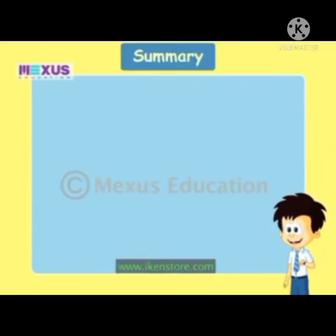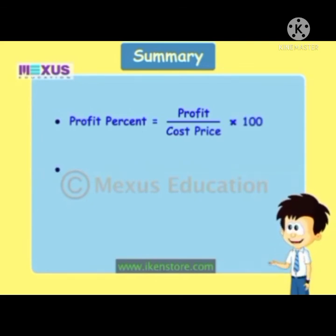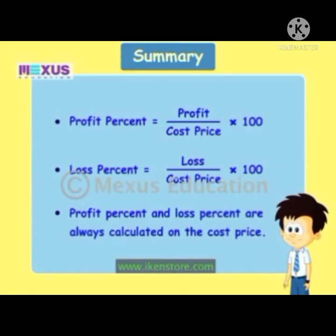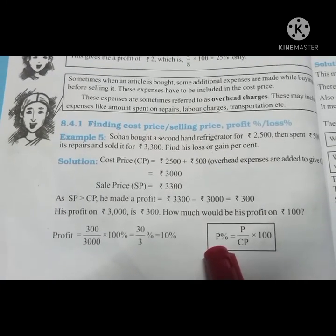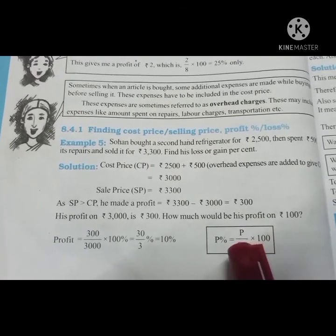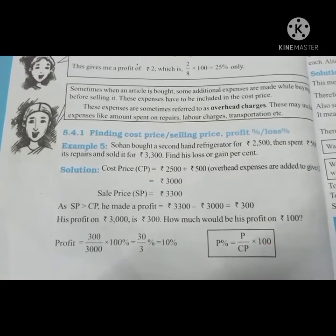To revise: to calculate profit percentage, divide the profit by the cost price and multiply by 100. To calculate loss percent, divide the loss by the cost price and multiply by 100. Remember, profit and loss percent are always calculated on the cost price. Profit percentage = (profit amount ÷ cost price) × 100. Loss percentage = (loss amount ÷ cost price) × 100.